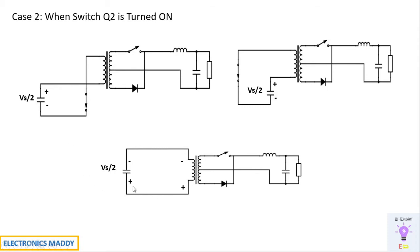When Q2 conducts, minus VS/2 will appear across the primary side of the transformer — a very important observation. Minus and plus is the polarity associated with the primary winding of the transformer. Consequently, this will induce an equal amount of voltage based on the turns ratio. If the turns ratio is 2 on the secondary side, twice the voltage will be built, but the polarity will be the same minus-plus minus-plus because of dot convention. Since plus is connected to diode D2 it will be forward biased, and since minus is connected to diode D1 it will be reverse biased and act as open circuit.